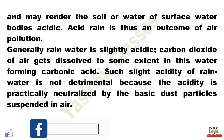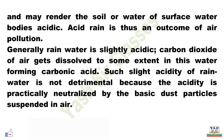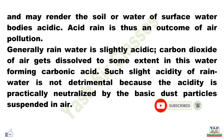Acid rain is thus an outcome of air pollution. Generally, rain water is slightly acidic. Carbon dioxide of air gets dissolved to some extent in this water forming carbonic acid. Such slight acidity of rain water is not detrimental because the acidity is practically neutralized by the basic dust particles suspended in air.